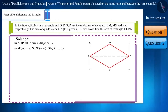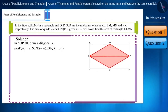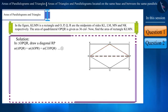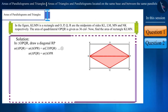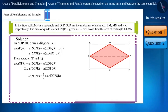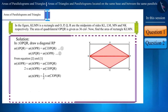You know that a diagonal of a parallelogram divides it into two congruent triangles, and the area of congruent shapes is equal. Therefore, the area of triangle PQR will be equal to the area of triangle OPR, and it will be half the area of parallelogram OPQR. Thus, we get the area of each of these two triangles as 18 cm².